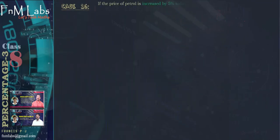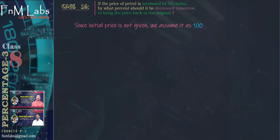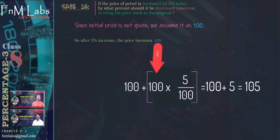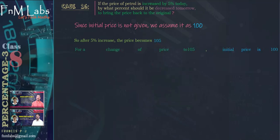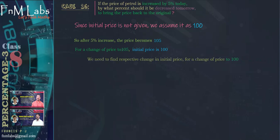Case number 16. If the price of petrol is increased by 5% today, by what percent should it be decreased tomorrow to bring the price back to the original? Here the initial price is not given, so we assume it is 100. After a 5% increase, the price becomes 105 — that is 5% of 100, which means 5 more, giving 105. So if we assume the initial price is 100, the price changes to 105. We need to find what percent of 105 must be reduced to bring it back to 100.